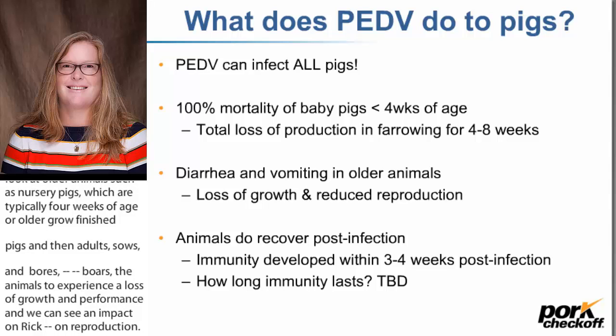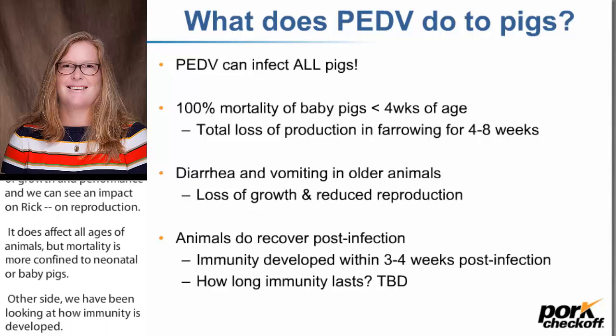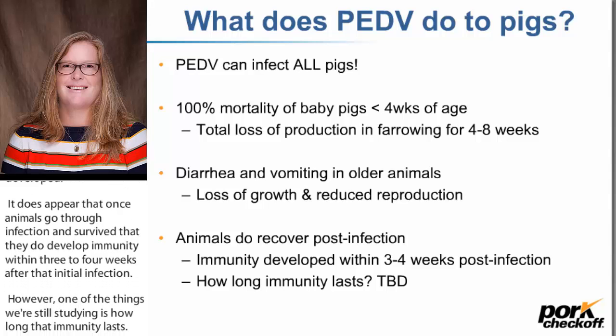We have been looking at how immunity is developed, and it does appear that once animals go through infection and survive, they develop immunity within three to four weeks after that initial infection. However, we are still studying how long that immunity lasts, because that will impact how well and how quickly we can clean up these herds and get rid of the virus from the farm.